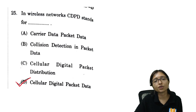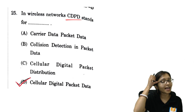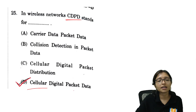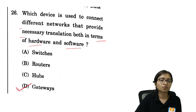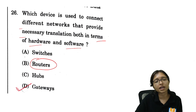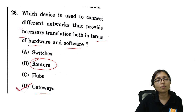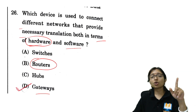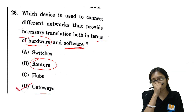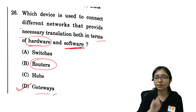Next: the full form of CDPD in wireless networks is Cellular Digital Packet Data — this type of question can also come in ICT. Next: which device connects different networks providing translation in both hardware and software? Some students may choose router, but the answer should be gateway, because a router works only in hardware form, not software. According to my understanding, gateway is the correct answer.